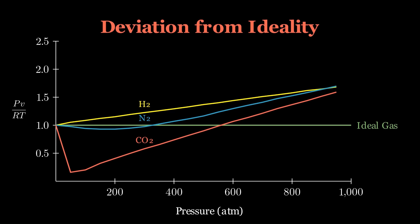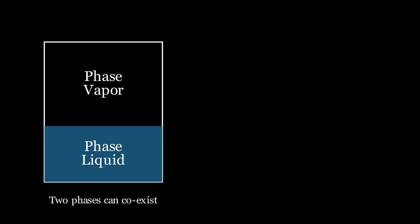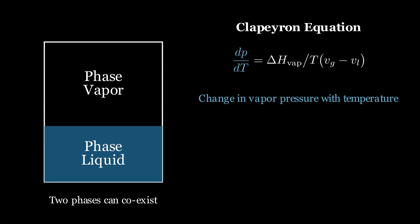Lewis recognized these shortcomings early on, yet many expressions continued relying on ideal gas assumptions. Let's consider vapor-liquid equilibrium. At a given temperature and pressure, both phases coexist in balance. To describe how the pressure of the vapor phase changes with temperature, we turn to the Clapeyron equation. The left side shows the rate of change of vapor pressure with temperature.